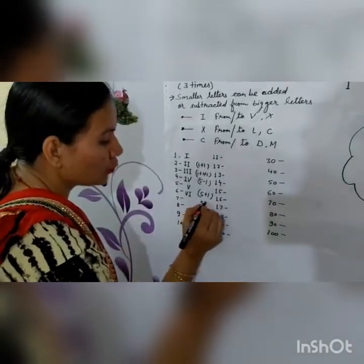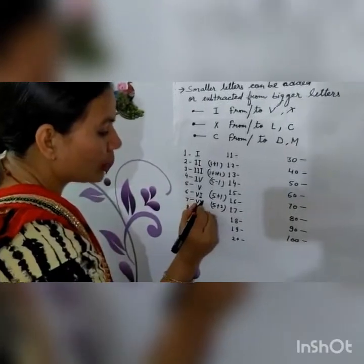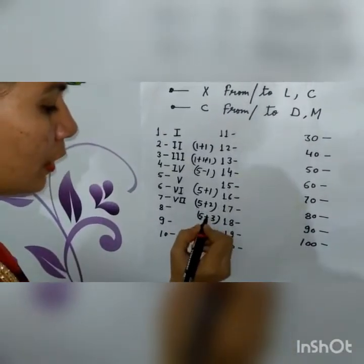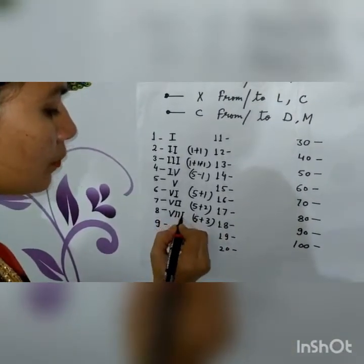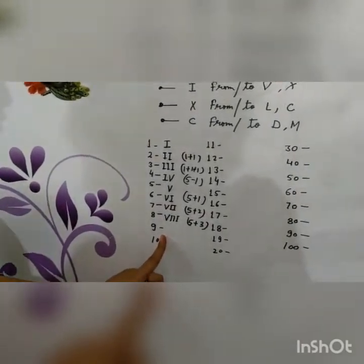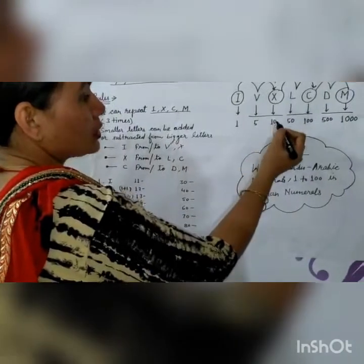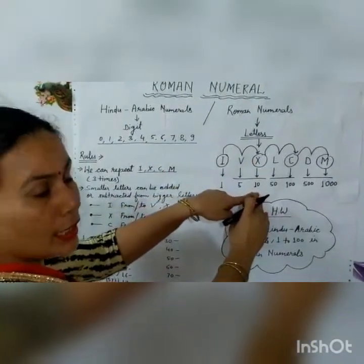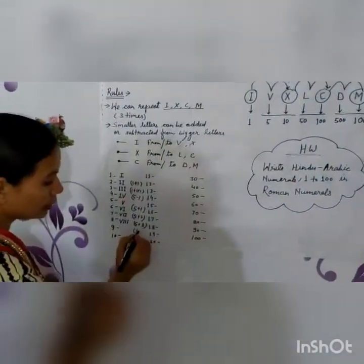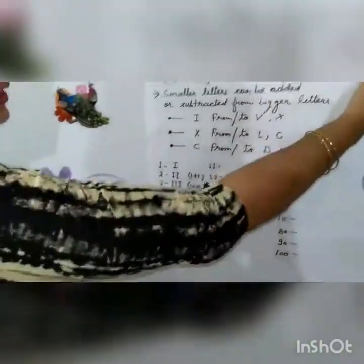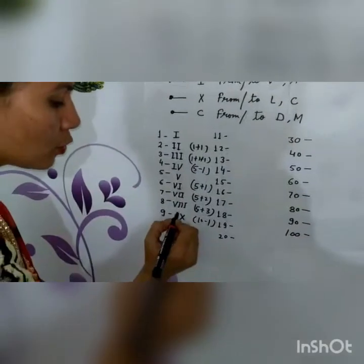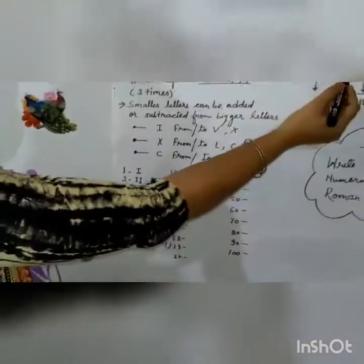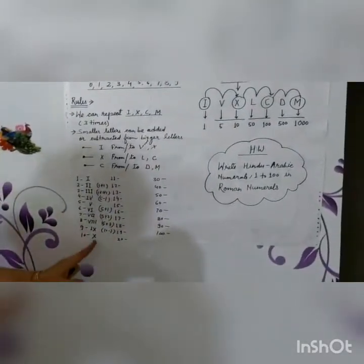For 7, that is 5 plus 2, written as VII. For 8, that is 5 plus 3, written as VIII. For 9, we subtract 1 from 10 — that is X minus I — so we write I to the left side of X, giving us IX. And 10, we know X stands for 10, so we write X.